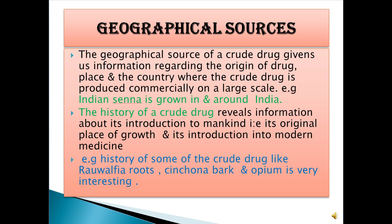Geographical sources of crude drugs give information regarding the origin of drugs — the place or country where the crude drug is produced commercially on a large scale. Example: Indian senna is grown in Arni, India. The history of crude drugs reveals information about its introduction to mankind — the original place of growth and its introduction into modern medicines. Example: the history of crude drugs like Rauwolfia roots, Cinchona bark, and opium is very interesting.